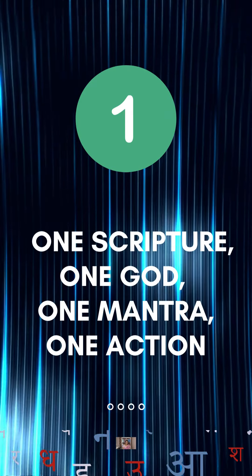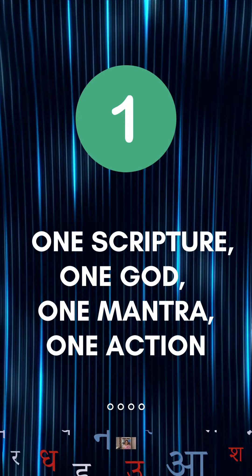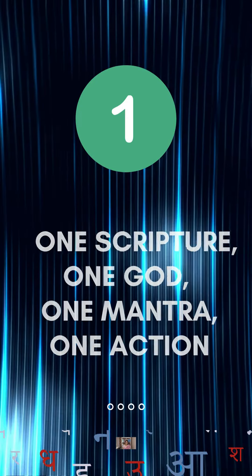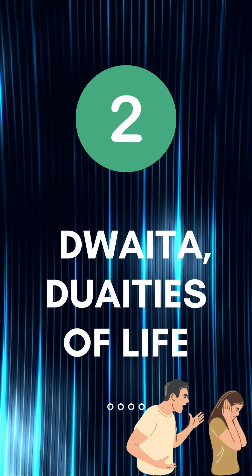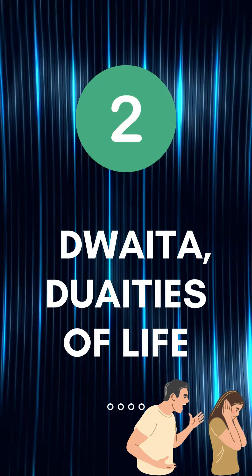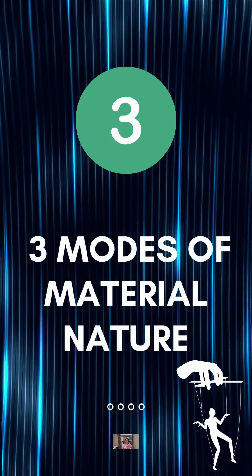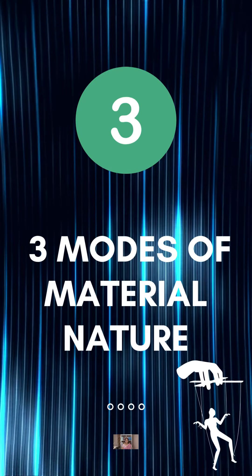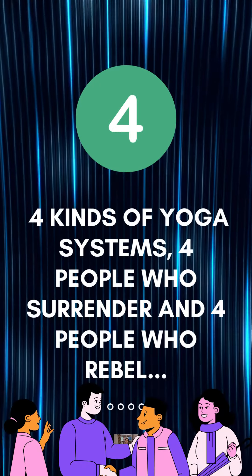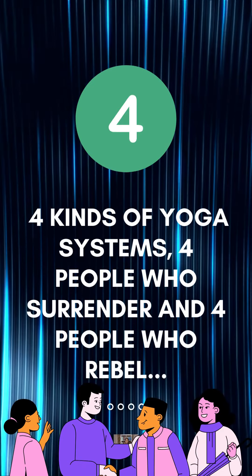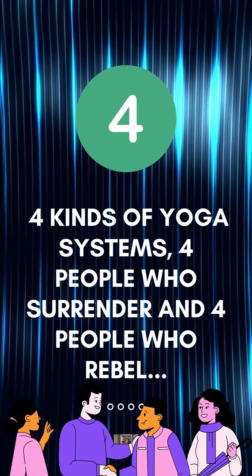One: one scripture, one God, one mantra, one action. Two: Dvaita, and also the dualities of life. Three: the three modes of material nature. Four: the four kinds of yoga systems, and the four people who surrender to Krishna.